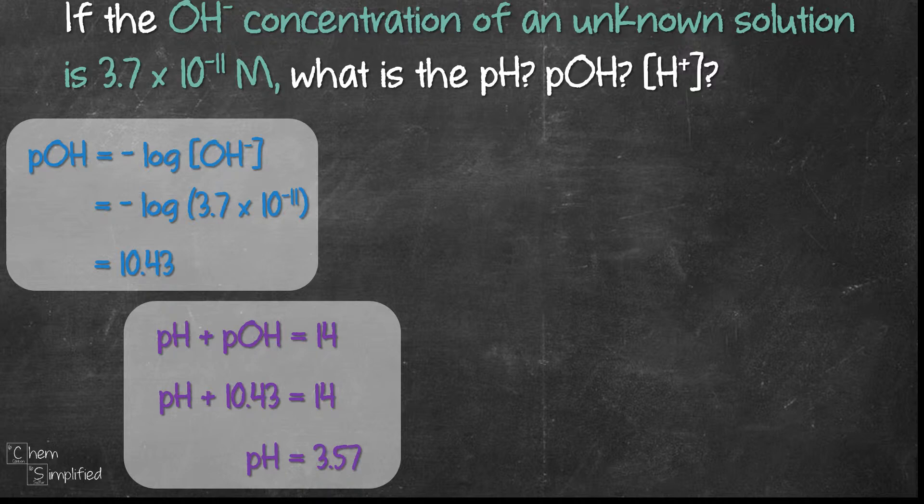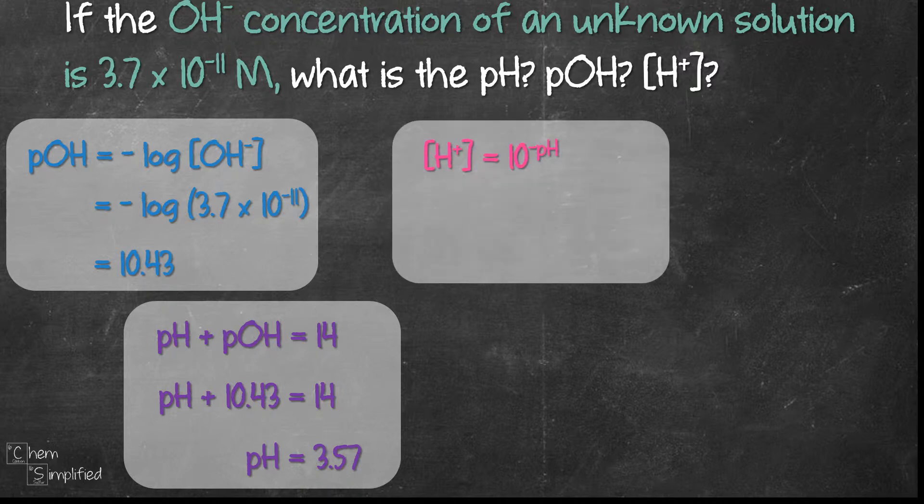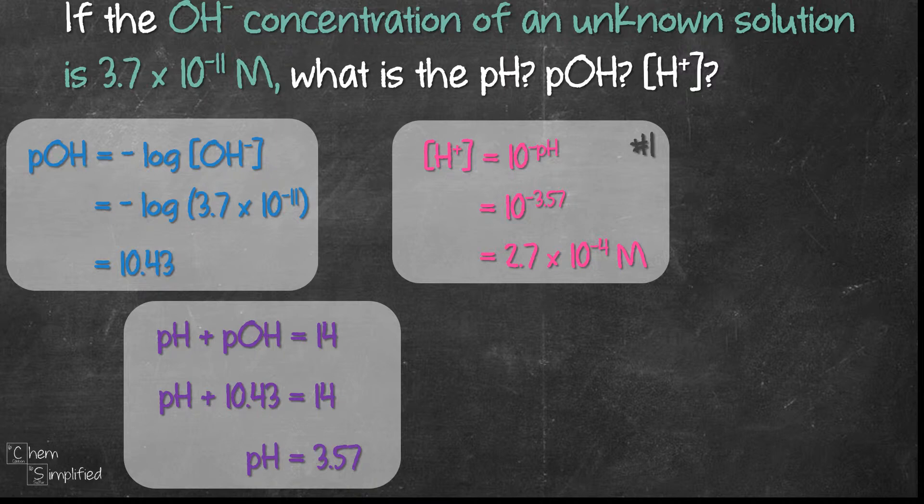Now that we have pH, we can use that to find the concentration of H+. We find the antilog of negative 3.57 and we get 2.7 times 10 to the negative 4 molar. It's important not to forget the unit molar for concentration. This is one way to find the concentration of H+ from pH.